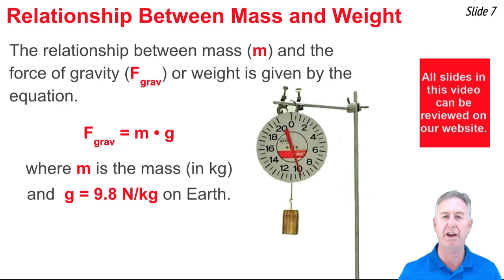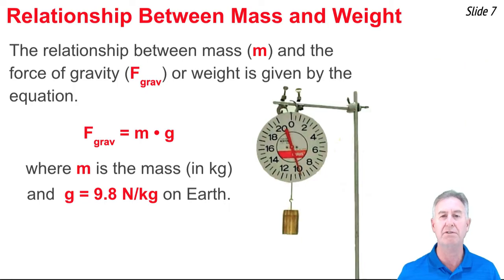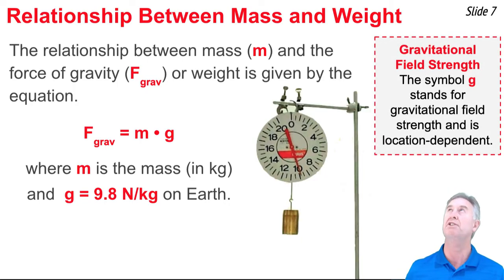In this equation, F_grav refers to the force of gravity or the weight of an object. M refers to the mass in units of kilograms. And g is the gravitational field strength. The gravitational field strength is that quantity which is dependent only upon the location. And on planet Earth, it's 9.8 newtons per kilogram.